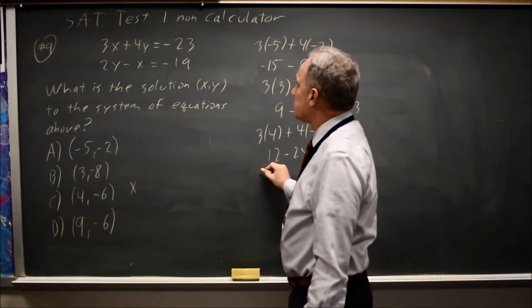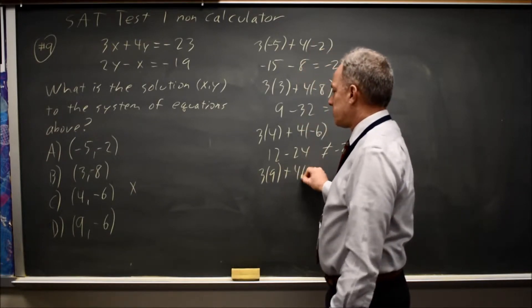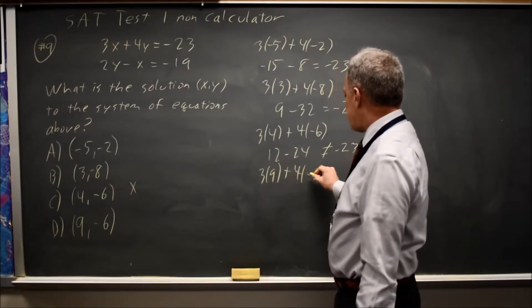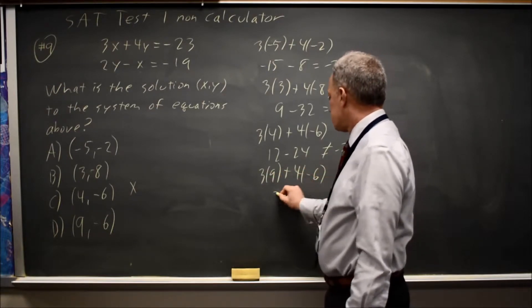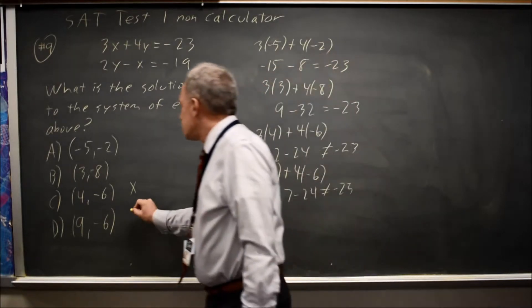And choice D, 3 times x is 3 times 9, plus 4 times y is 4 times negative 6, 27 minus 24 is not negative 23. So choice D is wrong.